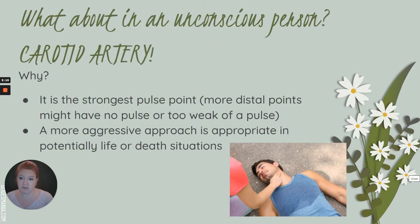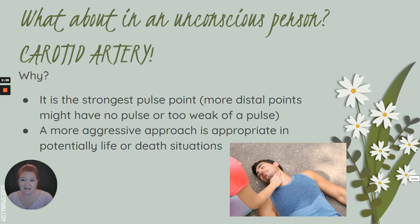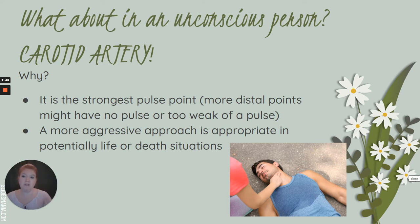If someone is unconscious and I'm trying to evaluate whether or not they have a pulse, I'm going to want to go for the strongest pulse point first. The further away you go from the heart, the weaker the pulse is. So I'm going for the carotid artery — it is literally the closest I can get. It is also a little more aggressive, and someone might be apprehensive about you reaching for their neck. However, if they're unconscious and I'm trying to determine how they are doing in a potentially life-or-death situation, it's appropriate to measure at the carotid artery.